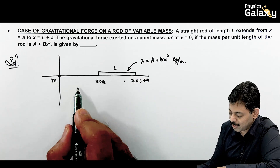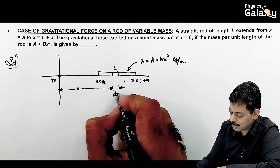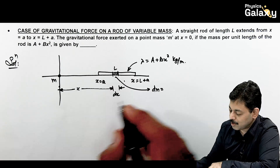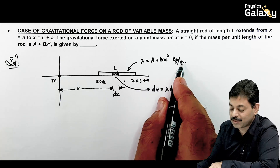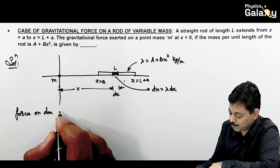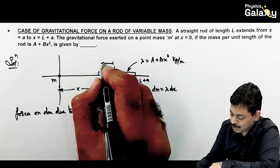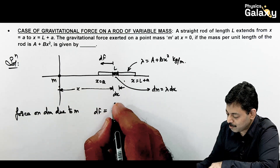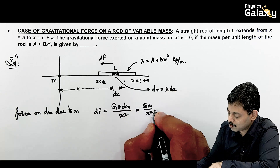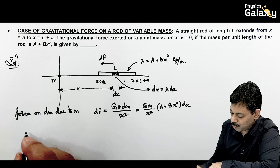Since the rod is extended, we consider a small element of width dx at distance x from the origin. The mass of this element is dm = λ dx. The gravitational force between mass m and element dm is dF = Gm·dm/x² acting in the leftward direction (attractive). Substituting dm: dF = Gm(a + bx²)dx / x².